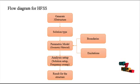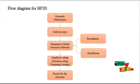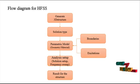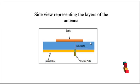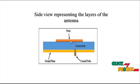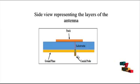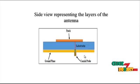The next process is the proposed design of the antenna. This is the side view representing the layers of the antenna: first the substrate, then the ground plane, coaxial probe, and then the patch. So this shows the patch, substrate, ground plane, and coaxial probe — this is the overall side view representation of the antenna layers.